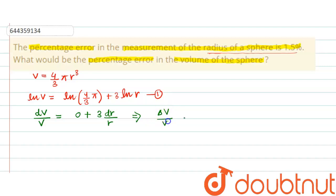should be equals to 3 Δr/r. Now multiplying by 100 on both sides, we can get that ΔV/V × 100 equals 3 Δr/r × 100. The percentage error is calculated as